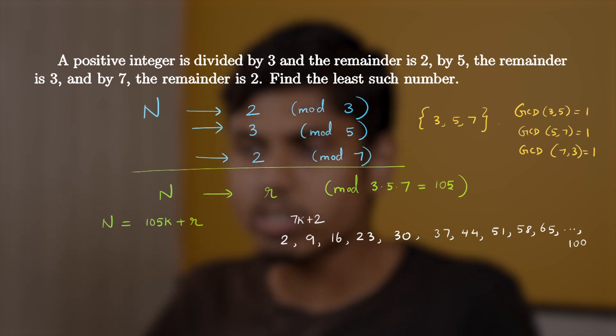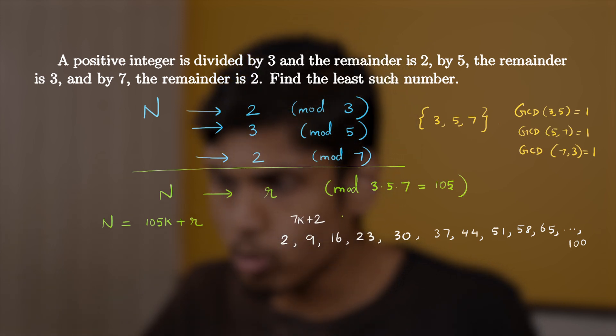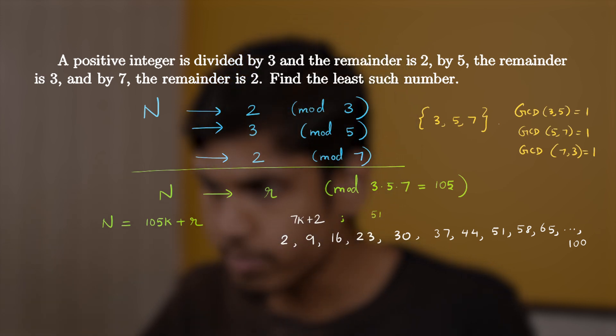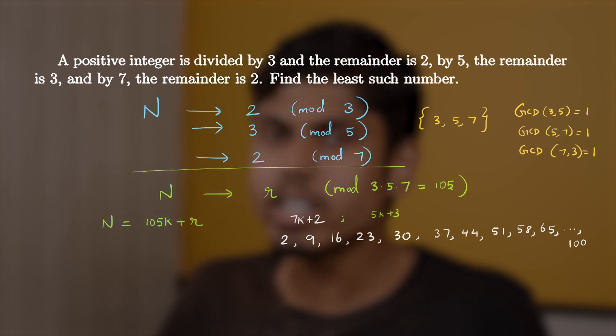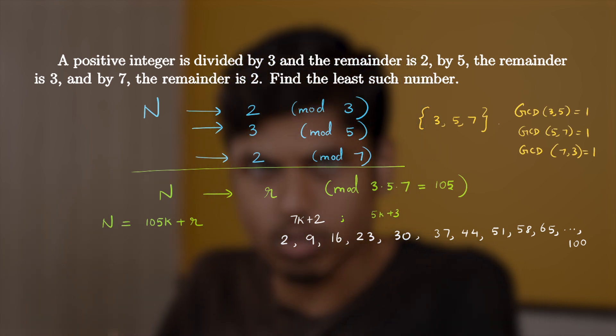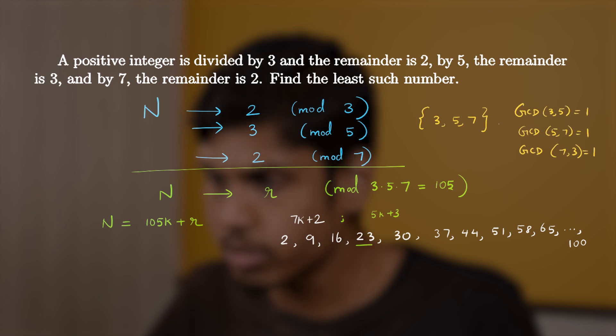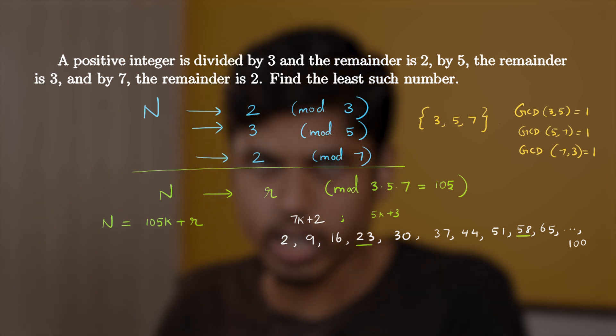And now coming to the second constraint. It should leave a remainder of 3 when divided by 5. So thus it must be also of the form 5k plus 3. Now choose the numbers that are of the form 5k plus 3 in this sequence or in this arithmetic progression. So those numbers must end with 8 or 3. So just select those numbers that end with 8 or 3. 23, 58 and so on. There could be some more in the subsequent numbers.